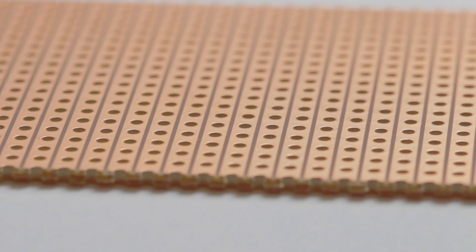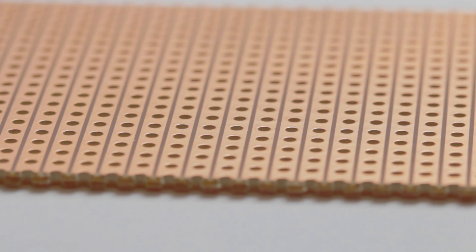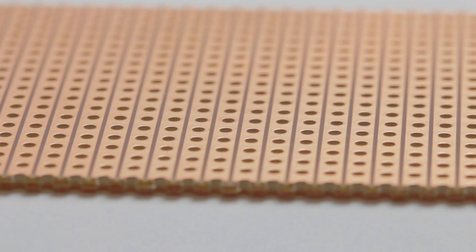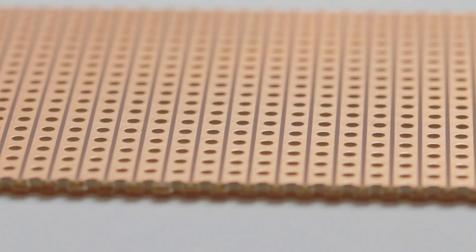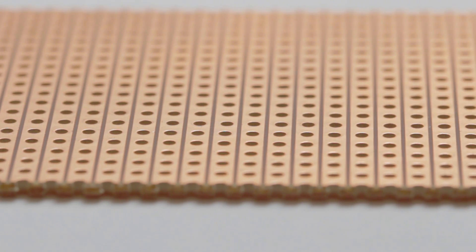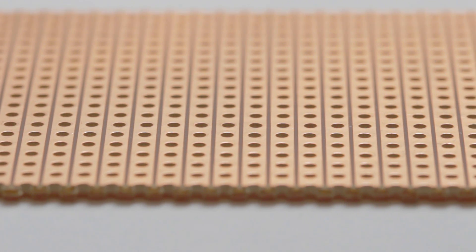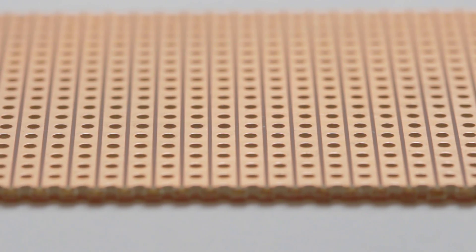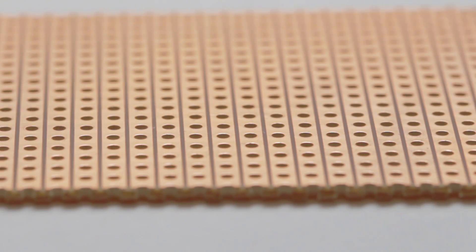Strip board, also known as vero board, is made of a resin substrate with copper strips on the top surface. There are holes through the board for soldering on wire and components. The holes have a standard 2.54mm spacing between them.